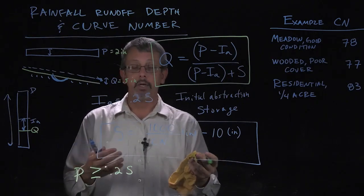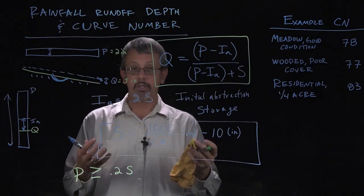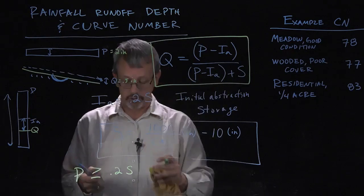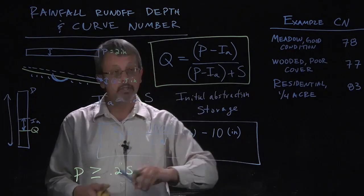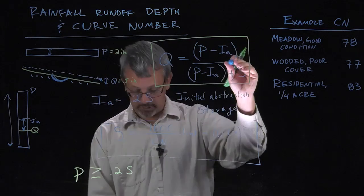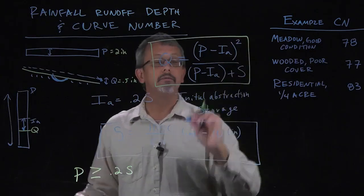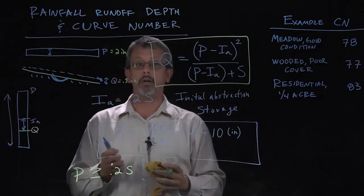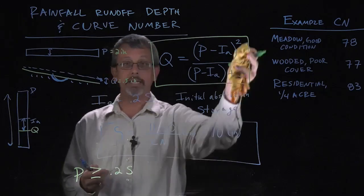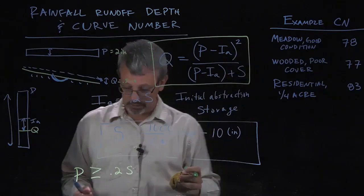With that 40 inch number, we would maybe need eight inches of precipitation before we would do any calculation of runoff. And I have made a small error here in that I missed a squared value. There's a squared value there on my formula, which makes sense that we get our answer in inches.